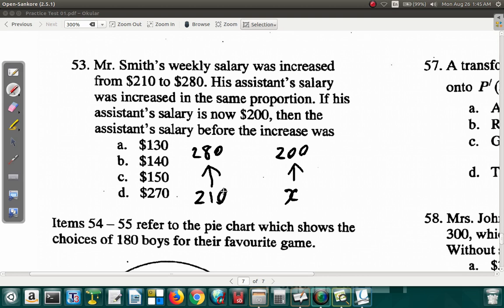What that means is that Mr. Smith's salary before divided by what it is now is equal to his assistant's salary before divided by what it is now. So you could put $210 over $280 is equal to X over $200, or you could use $280 over $210 is equal to $200 over X.